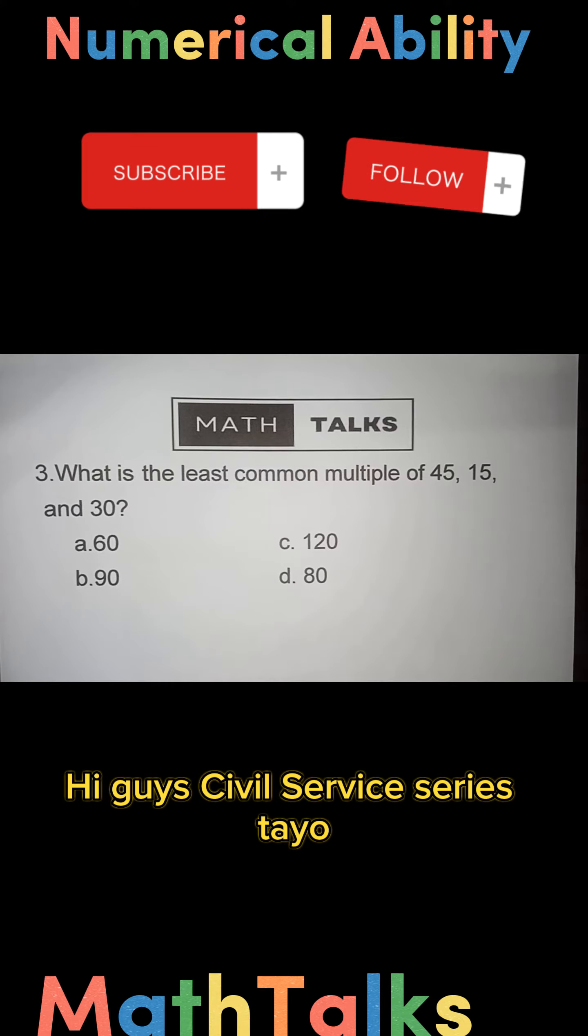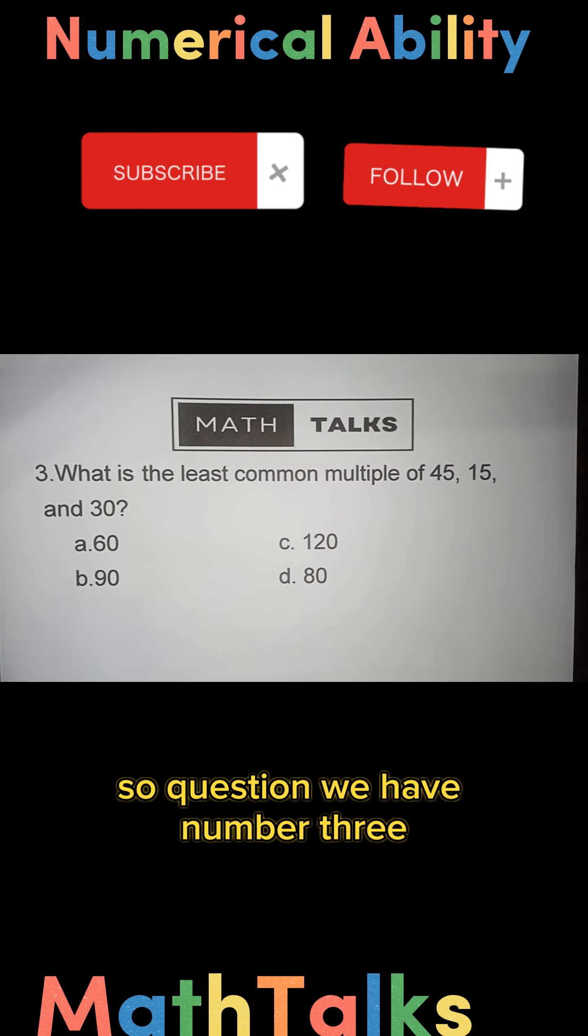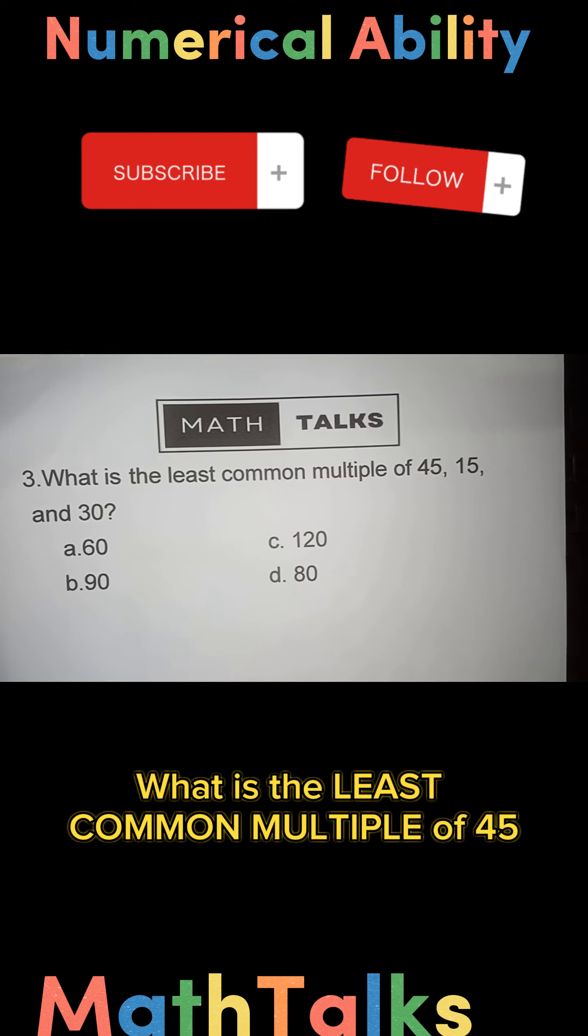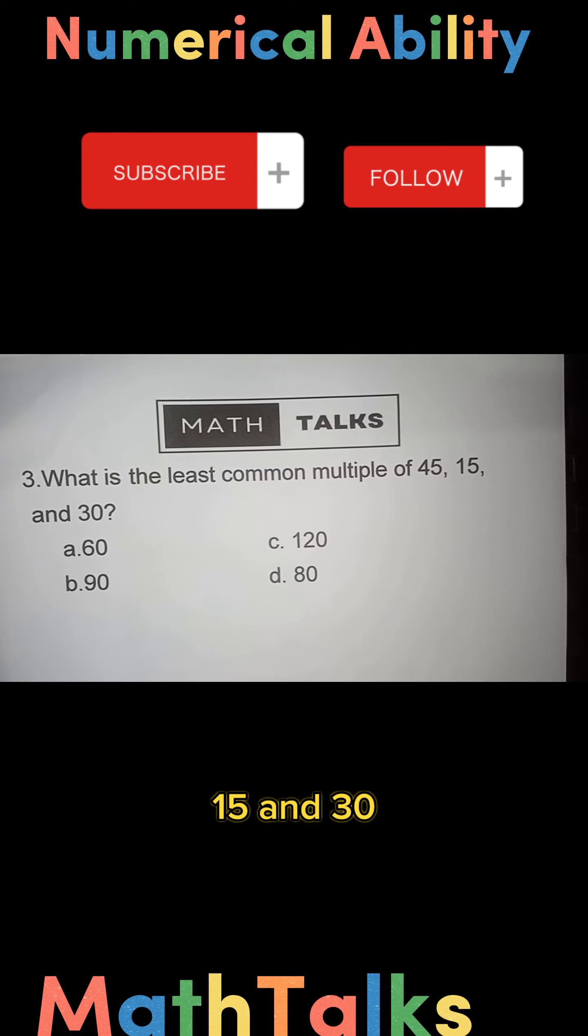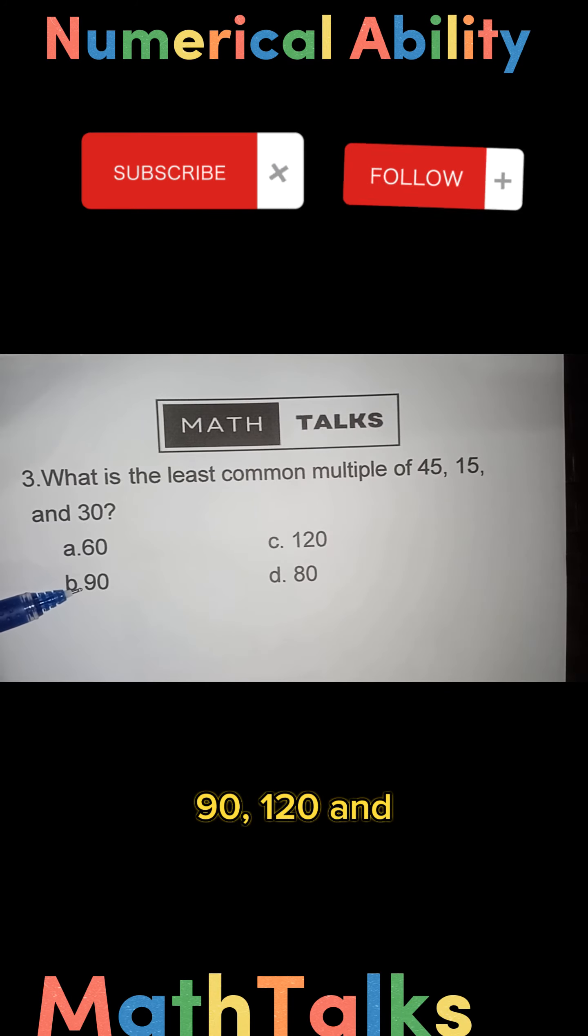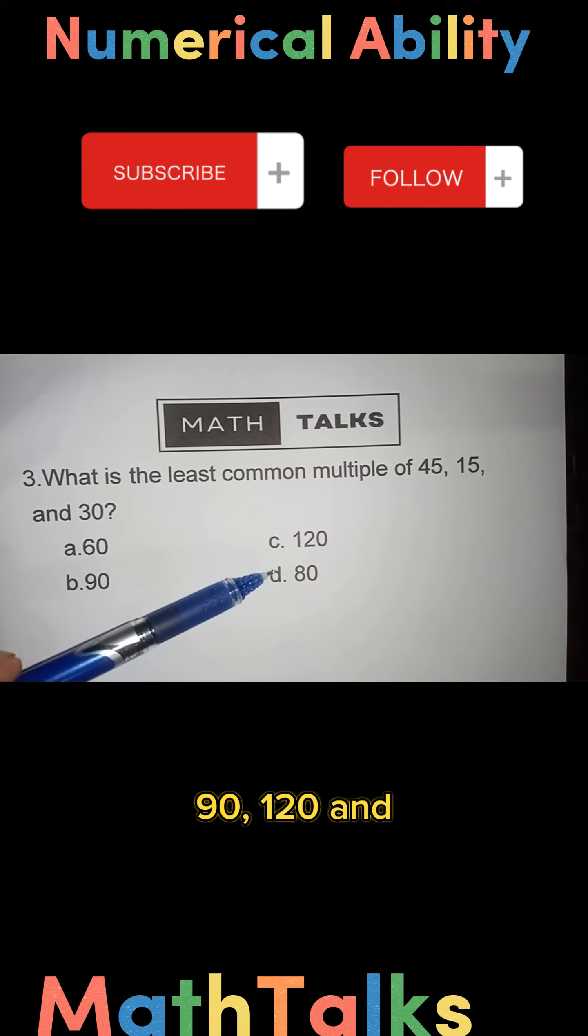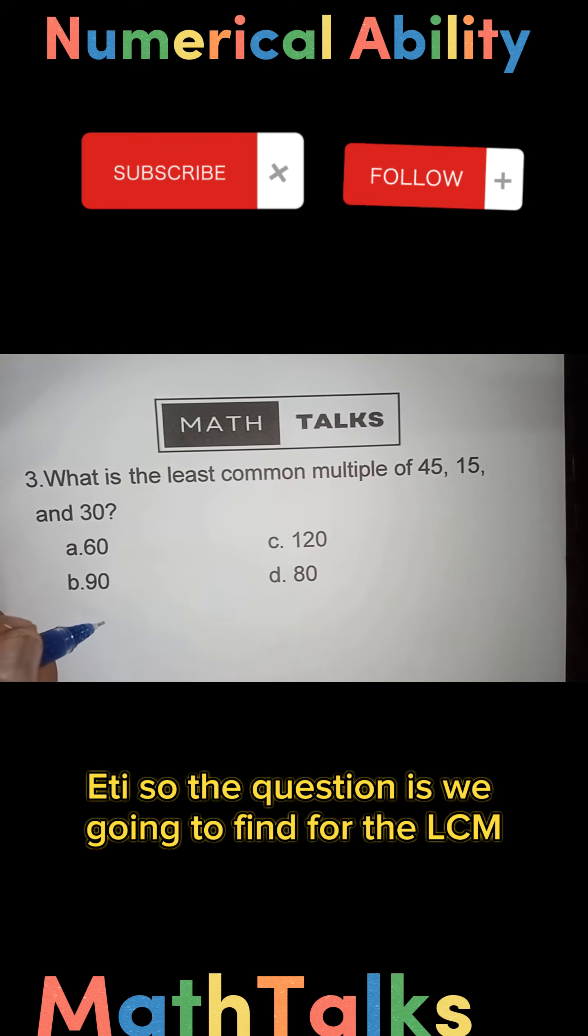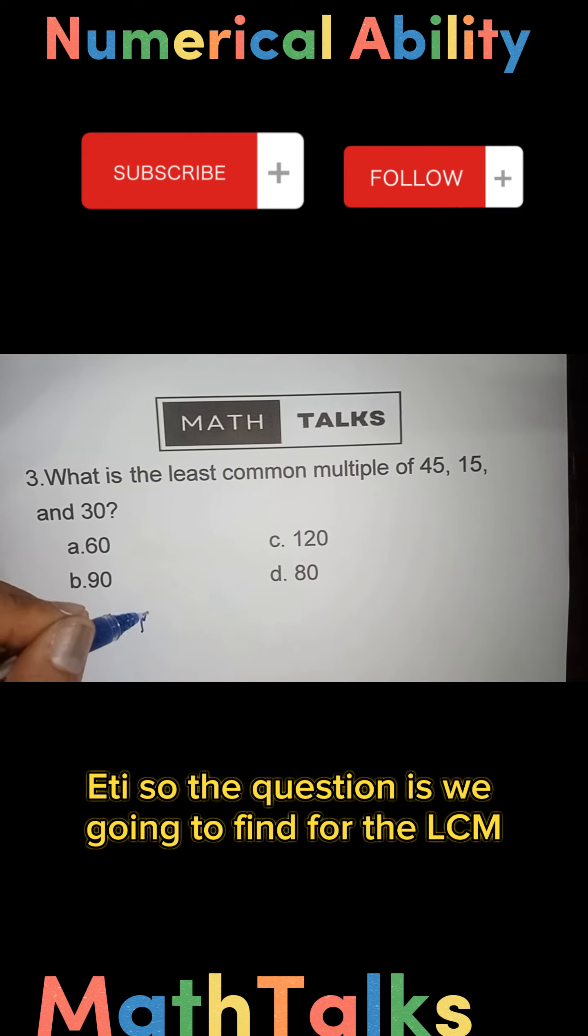Hi guys, civil services time. Question number three: What is the least common multiple of 45, 15, and 30? Choices are 60, 90, 120, and 80. So the question is we're going to find the LCM.